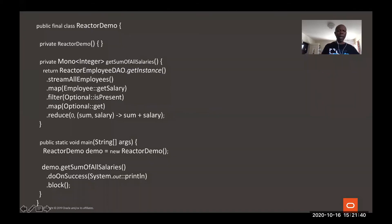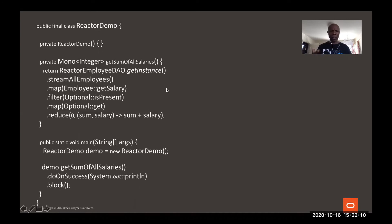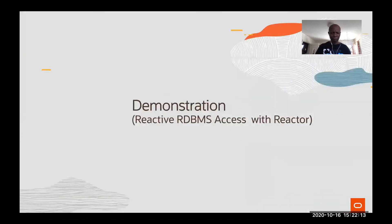So it looks like this — this is the application. The purpose is to return the sum of all salaries. We are streaming all employees; I'll show you the code. We get a stream of employee objects and on that we implement map, filter, etc. That's the substance of the application. So time for a demo — this will be a live demo.